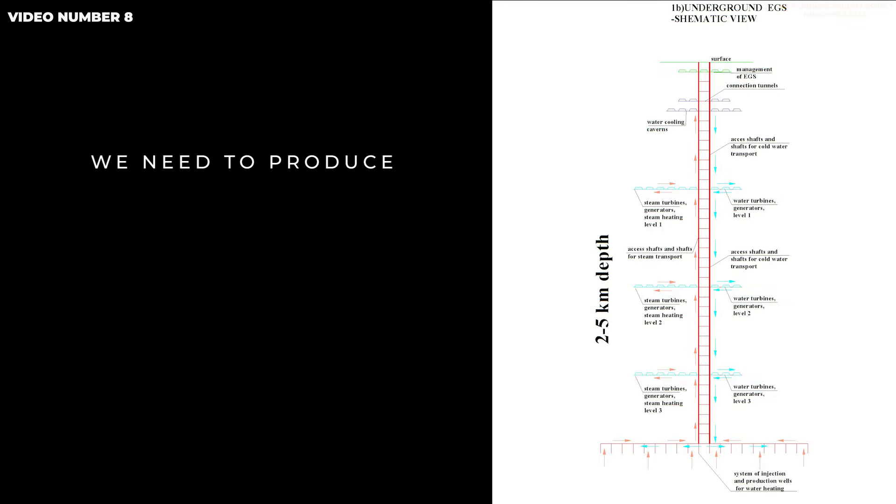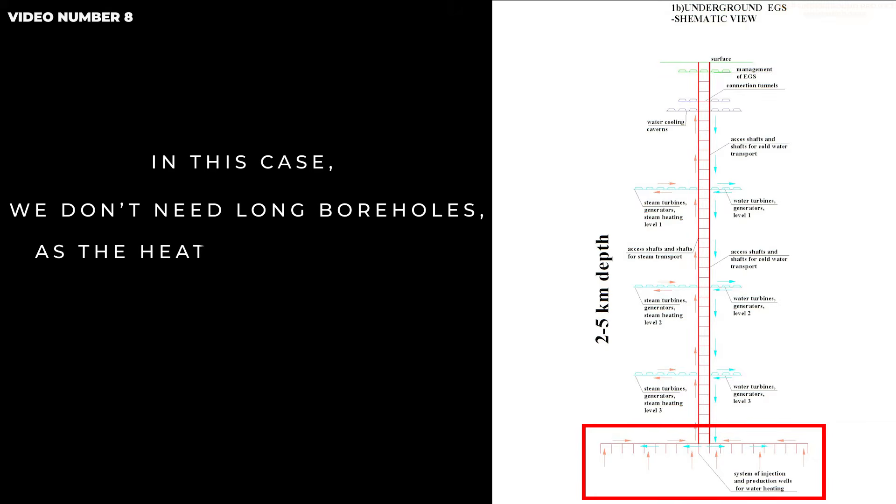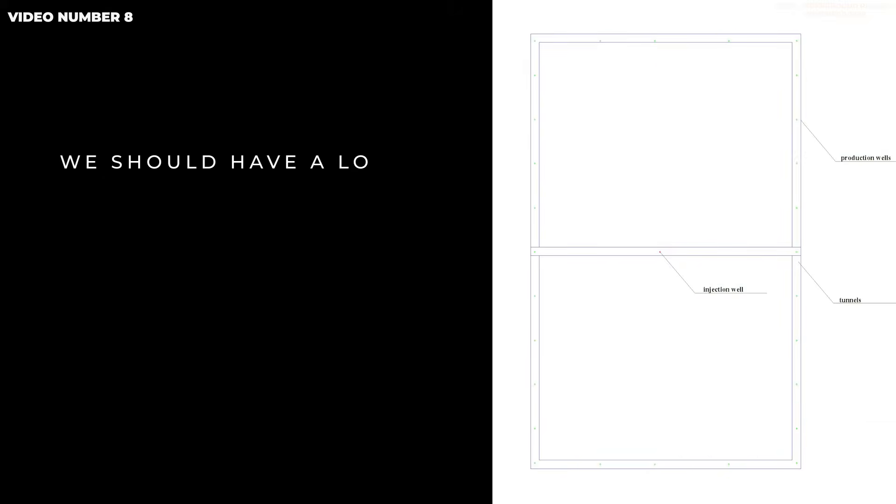We need to produce steam at the bottom. In this case, we don't need long boreholes as the heat is already high. We should have a lot of production wells but only one injection well. And finally, if you want more steam, you just need to construct additional tunnels and drill more boreholes at the bottom level, which means that increasing the power plant's capacity is easy and cheap once you are at the desired level.